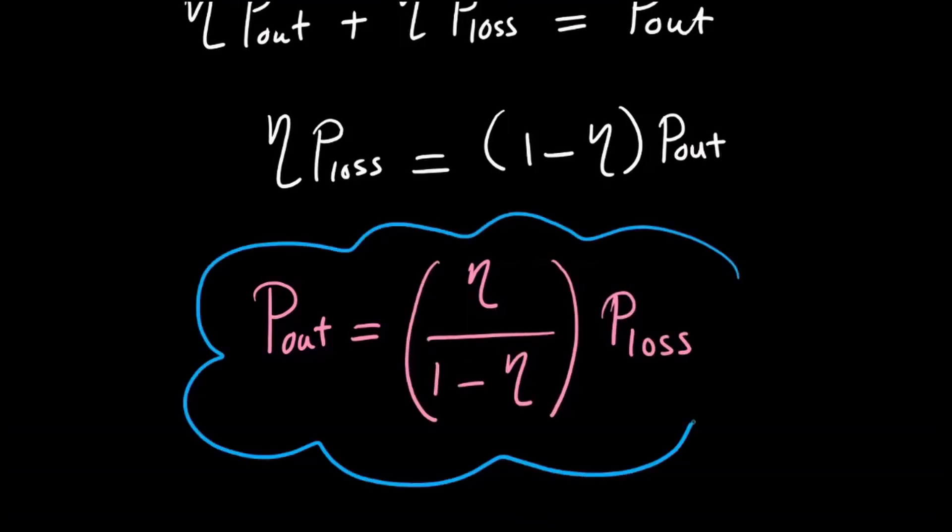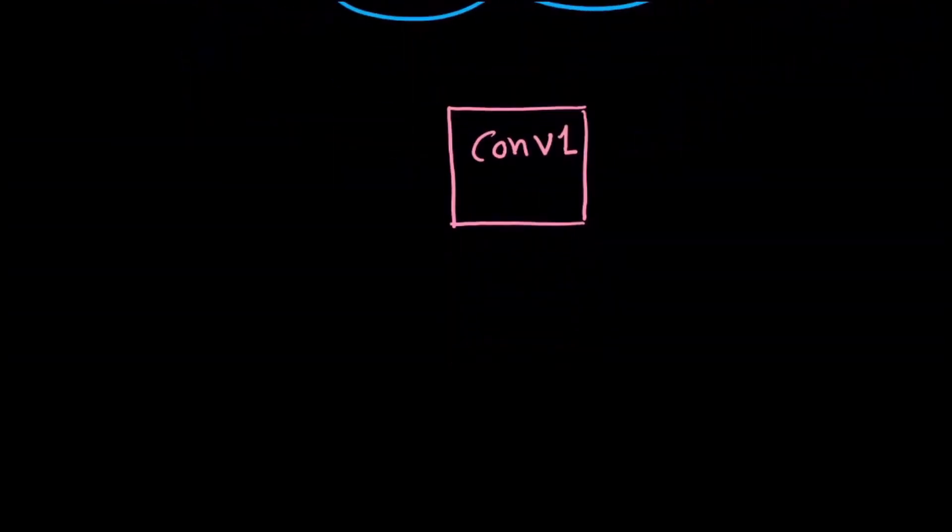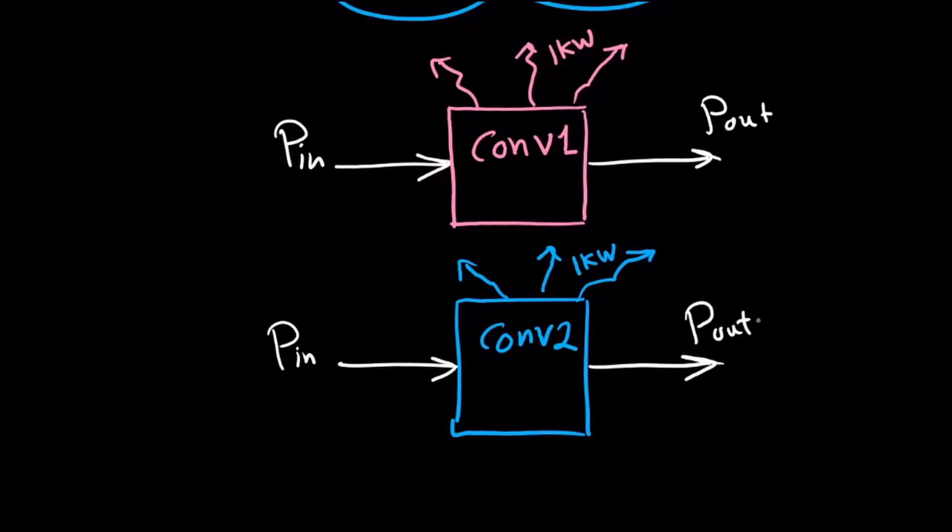Let's memorize this equation and think of two power converters. Both of these converters are designed to lose the same amount of power, which means we use the same number of components, for example. Let's say that this power loss equals one kilowatt. The first converter has an efficiency of 85 percent, and the second converter has a better efficiency by 10 percent, so its efficiency equals 95 percent.